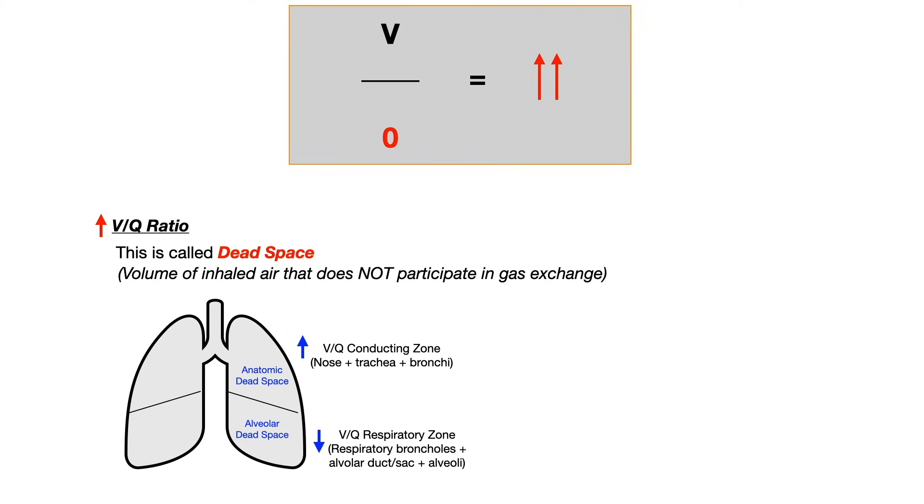So in a conducting zone, or in what we call anatomical dead space, VQ ratio is naturally increased, not because of any pathology, just because that's how the lung works. And that's how gravity works. And what we're talking about is the nose, the trachea, and the bronchi. Now in that anatomical dead space, ventilation is going to be relatively increased, percusion is going to be relatively decreased. Again, this isn't pathological. There's a natural conditioning of that ventilated air that's going on. That's why it's an anatomical dead space. But it's not like the lung is messed up per se. This is just what you get naturally at the top of the lung.